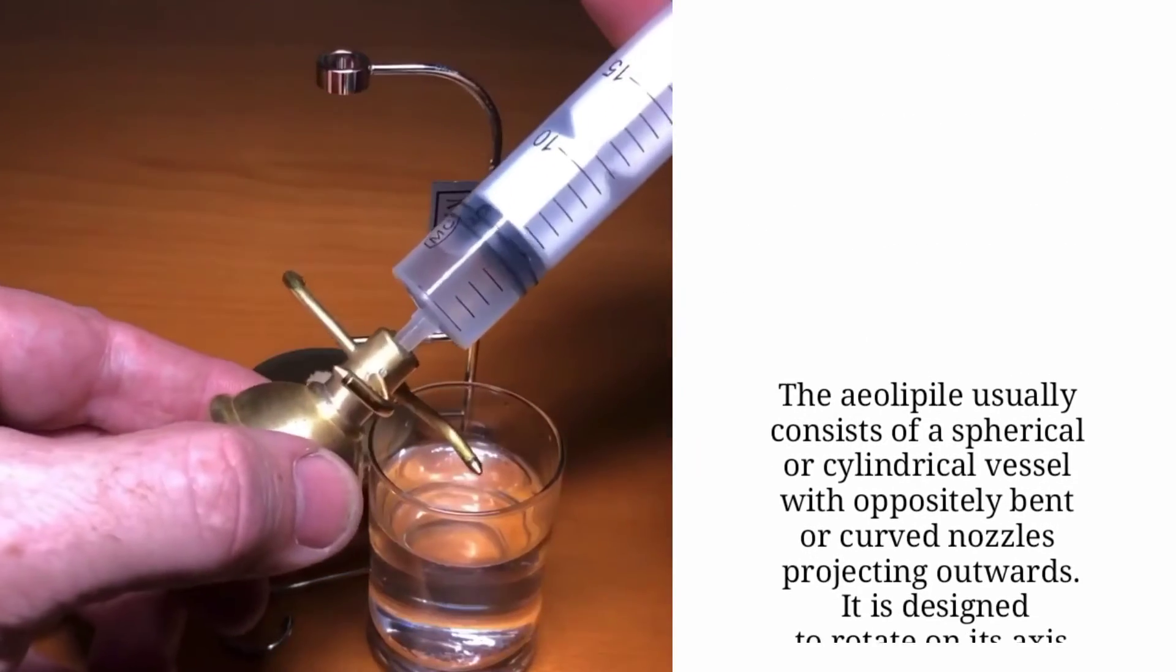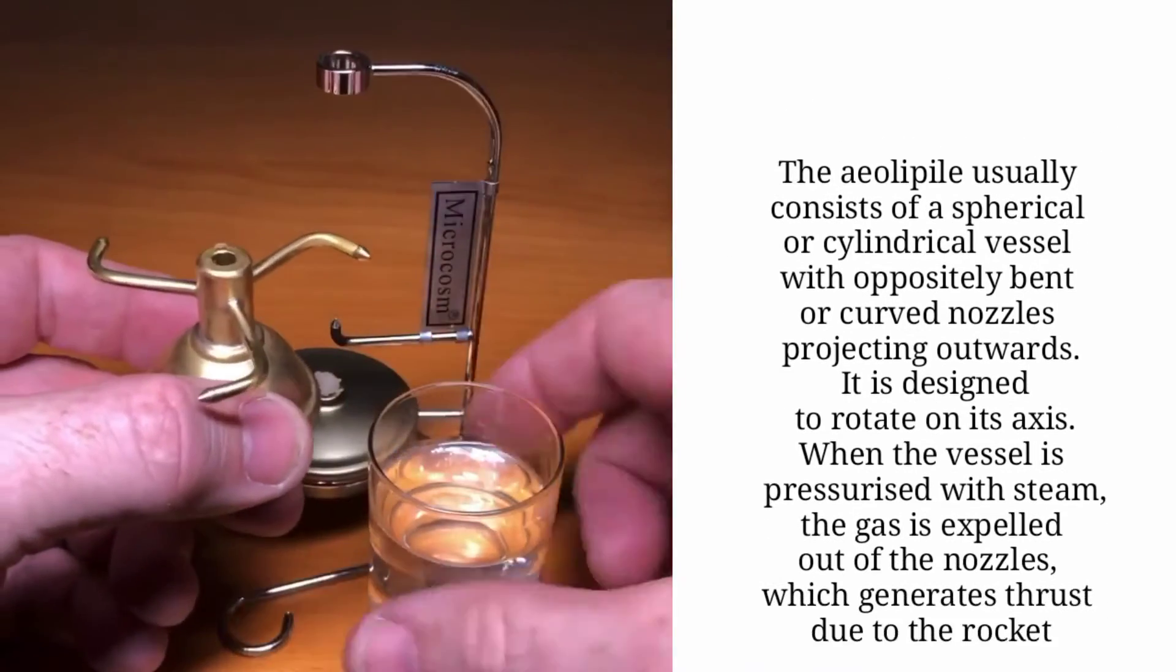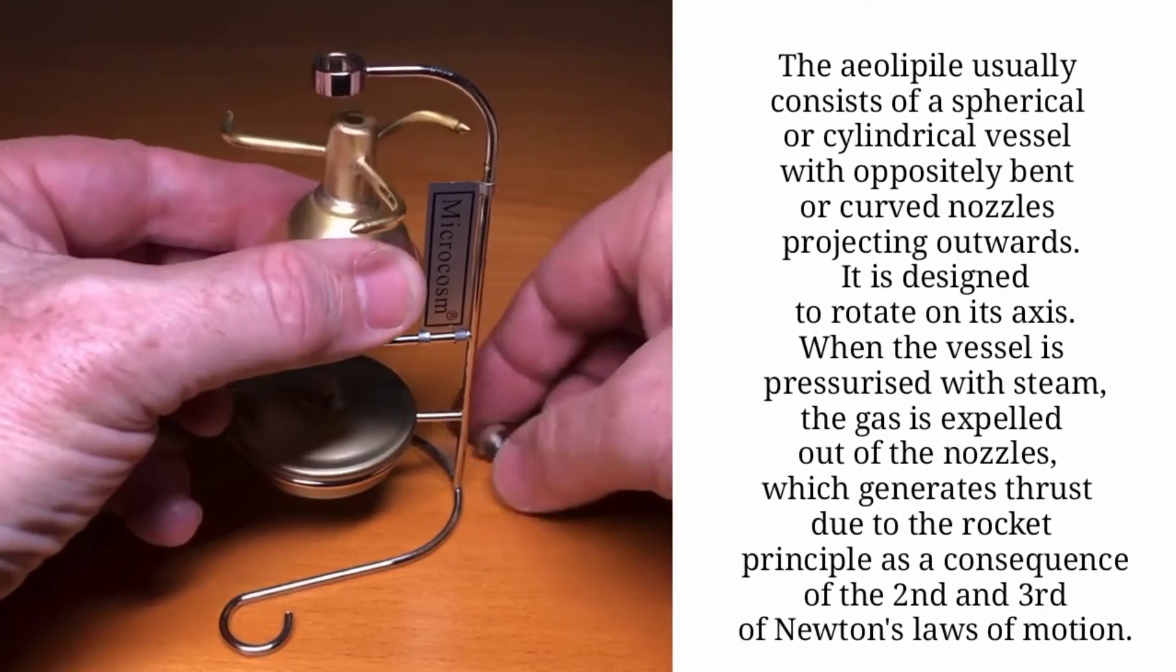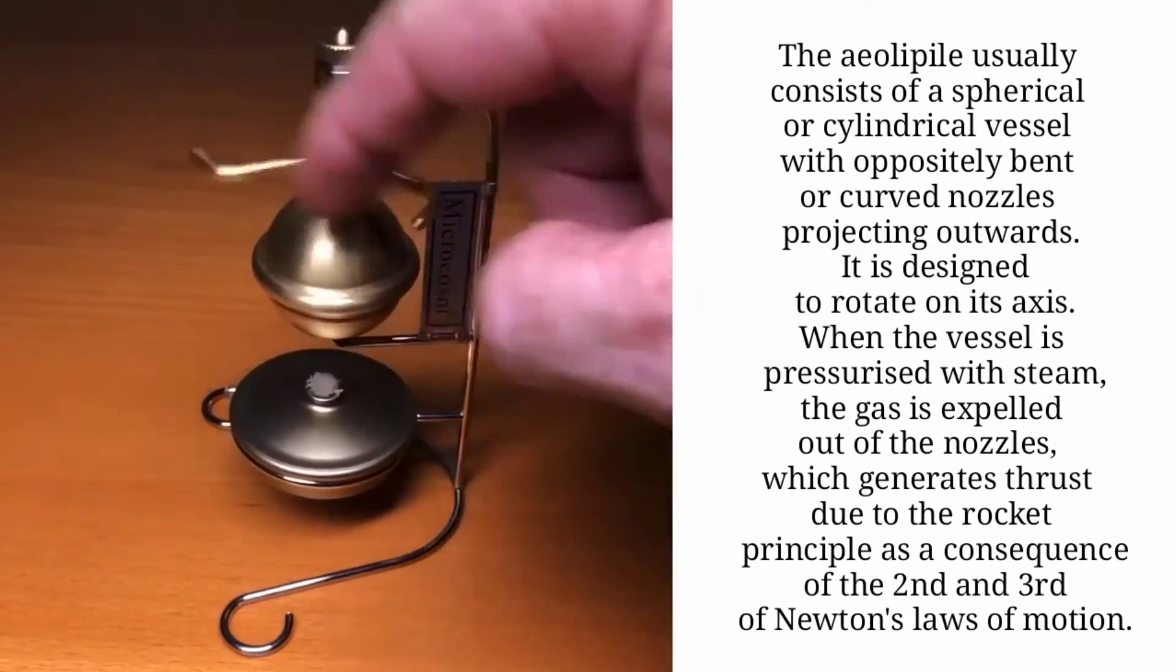The aeolipile usually consists of a spherical or cylindrical vessel with oppositely bent or curved nozzles projecting outwards. It is designed to rotate on its axis.